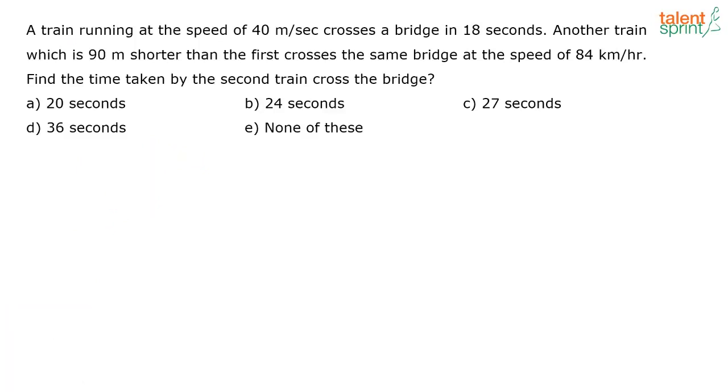What is given here? One train is traveling with a speed of 40 meters per second and it is crossing a bridge in 18 seconds. So what is the distance traveled by train 1? It is nothing but 40 into 18, or that is equal to 18 into 4, that is 720 meters.